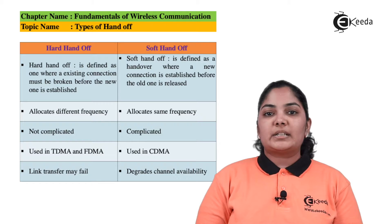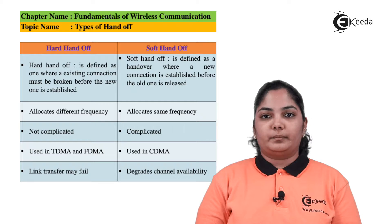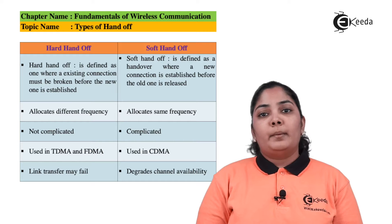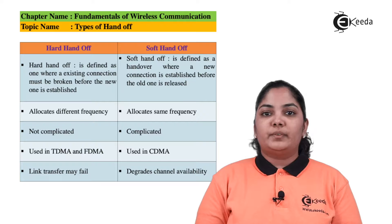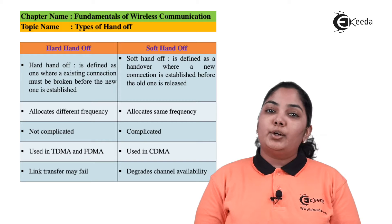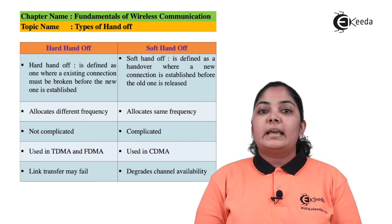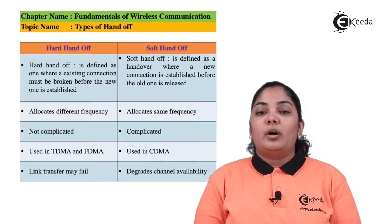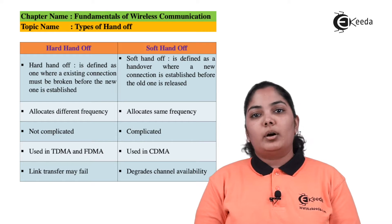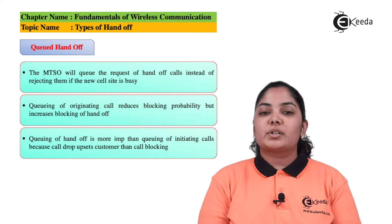In hard handoff, because we first break the connection and then make a new one, the link transfer may sometimes fail due to unavailability of channels in the new base station. In soft handoff, it degrades channel availability — while already connected to the old base station, trying to connect to multiple base stations causes multiple channels in nearby base stations to become busy, reducing availability for new connections or other handoffs.